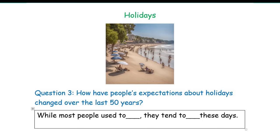Now let's look at question three: how have people's expectations about holidays changed over the last 50 years? Let's explore how holiday expectations have evolved over time. Use a clear template to structure your response. Start with 'while most people used to' and describe traditional holiday expectations, such as staying closer to home or taking fewer vacations. Then contrast with 'they tend to these days.' For example, they tend to seek more adventurous and exotic destinations, as well as unique and personalized experiences.